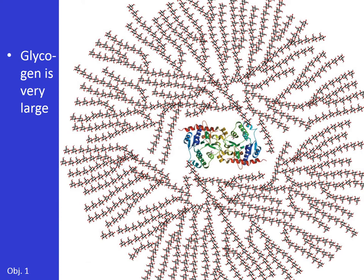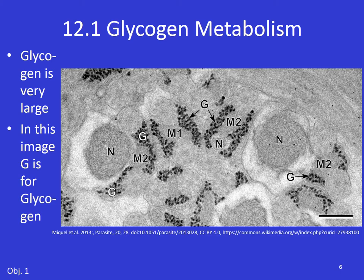The first thing we need to talk about is the structure and function of glycogen. Glycogen is very large — in fact, it's so large you can actually see it under a microscope. In this microscope image, the letter G is pointing to specks of glycogen. Glycogen molecules are so large you can see them as tiny little specks within liver cells.